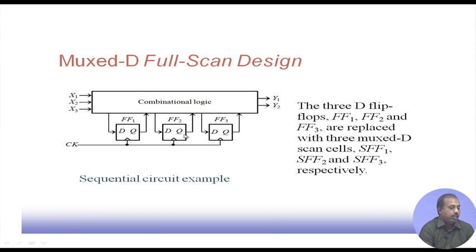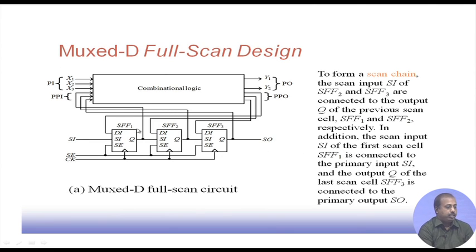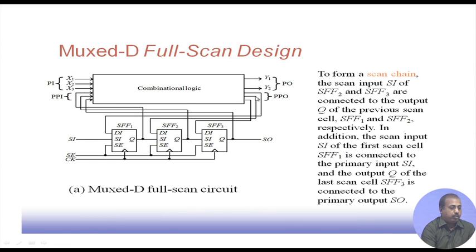Consider a sequential circuit with three flip flops FF1, FF2, and FF3 with combinational logic, primary inputs x1, x2, x3, and primary outputs y1, y2. In a MUX-based full scan design, these flip flops are replaced by three MUX-D scan flip flops SFF1, SFF2, and SFF3. As far as the combinational logic is concerned, it takes x1, x2, x3 as inputs plus the flip flop outputs as pseudo primary inputs (PPI), and generates primary outputs and pseudo primary outputs (PPO).